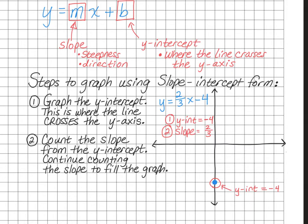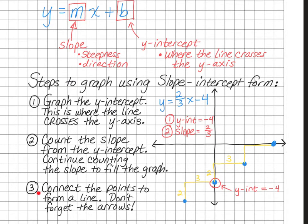Sometimes it's nice to draw the triangle — rise 2 and run 3 — so our next point goes here. Slope continues, so we can keep going with our stair step: up 2, over 3, and put another point there. I can also go in the opposite direction — over 3 and down 2 — and put another point here. Now I have 4 points, and now I can connect those points. That brings us to step 3: connect the points to form a line. Don't forget the arrows, because a line continues forever in both directions.